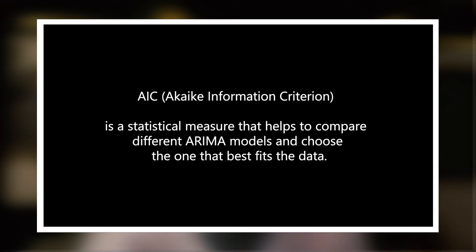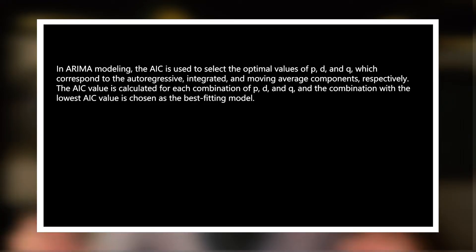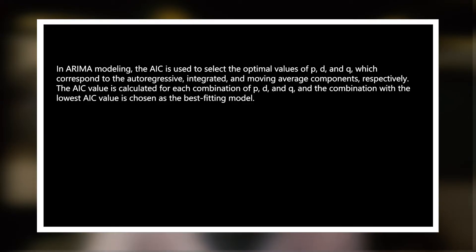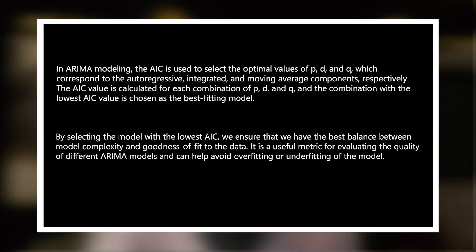That's where AIC — the Akaike Information Criterion — comes into play. AIC is a statistical measure that helps compare different ARIMA models and choose the one that best fits the data. It is based on two factors: the likelihood of the model and the number of parameters used. AIC penalizes models that use more parameters, encouraging simpler models. The combination of P, D, and Q with the lowest AIC value is chosen as the best fitting model, ensuring the best balance between model complexity and goodness of fit.